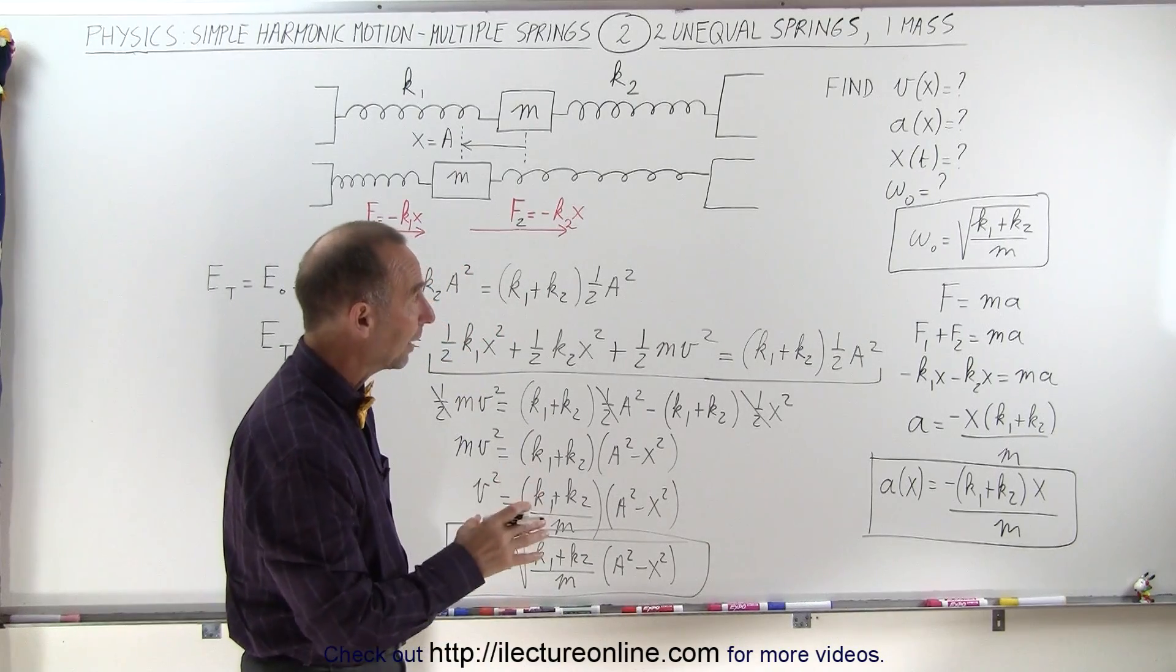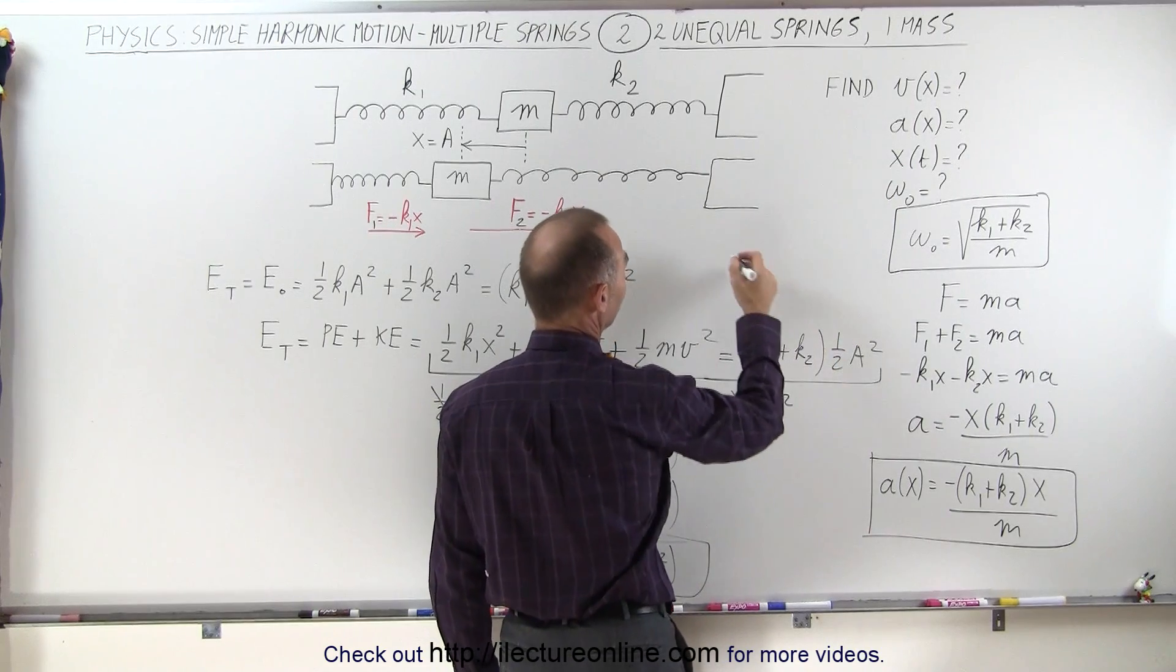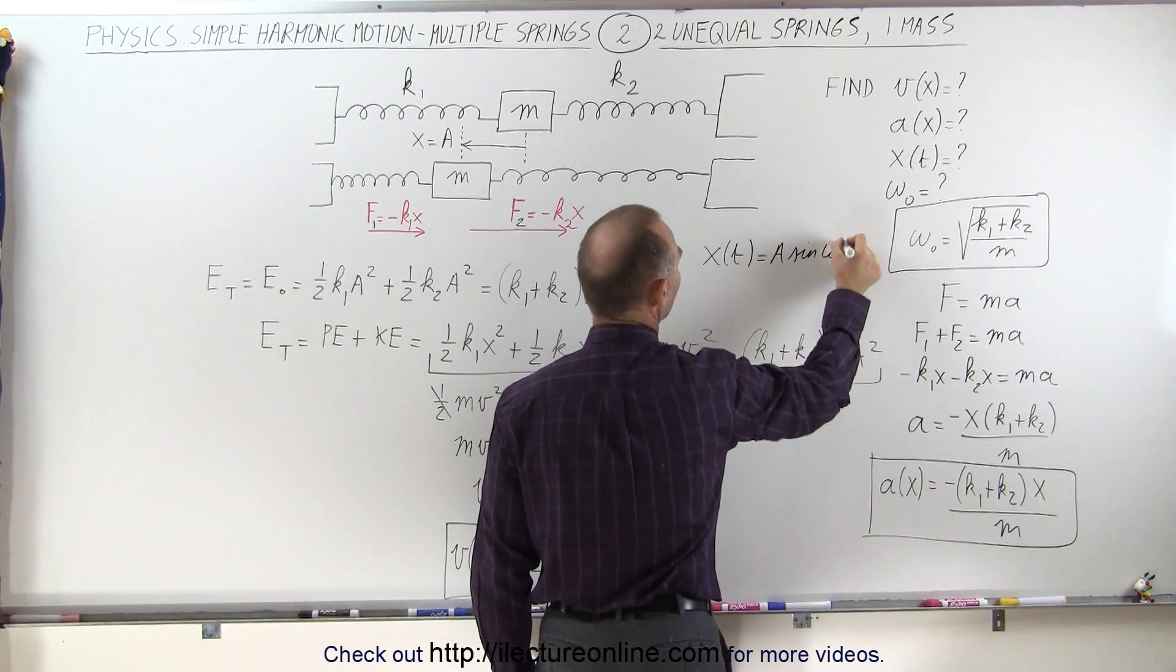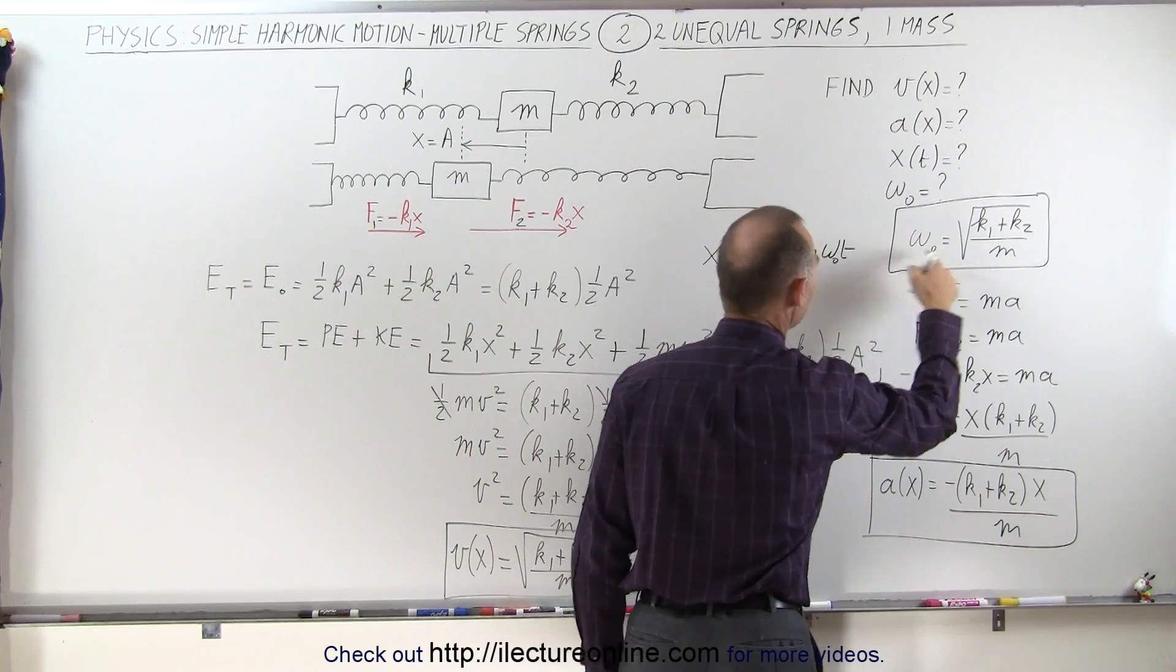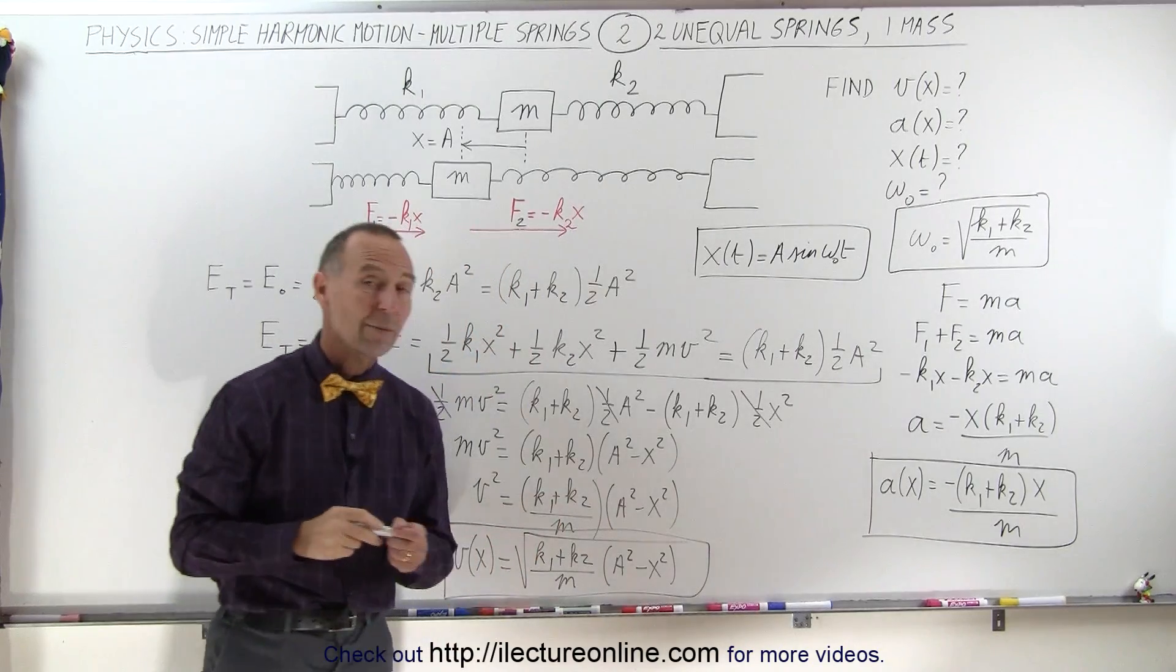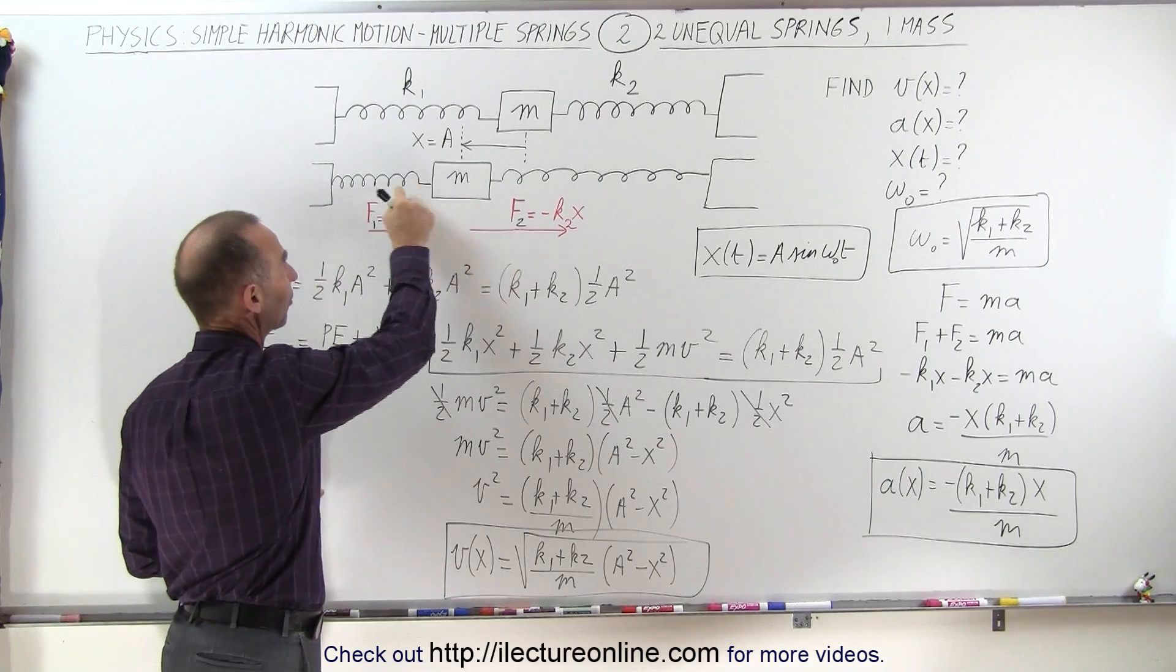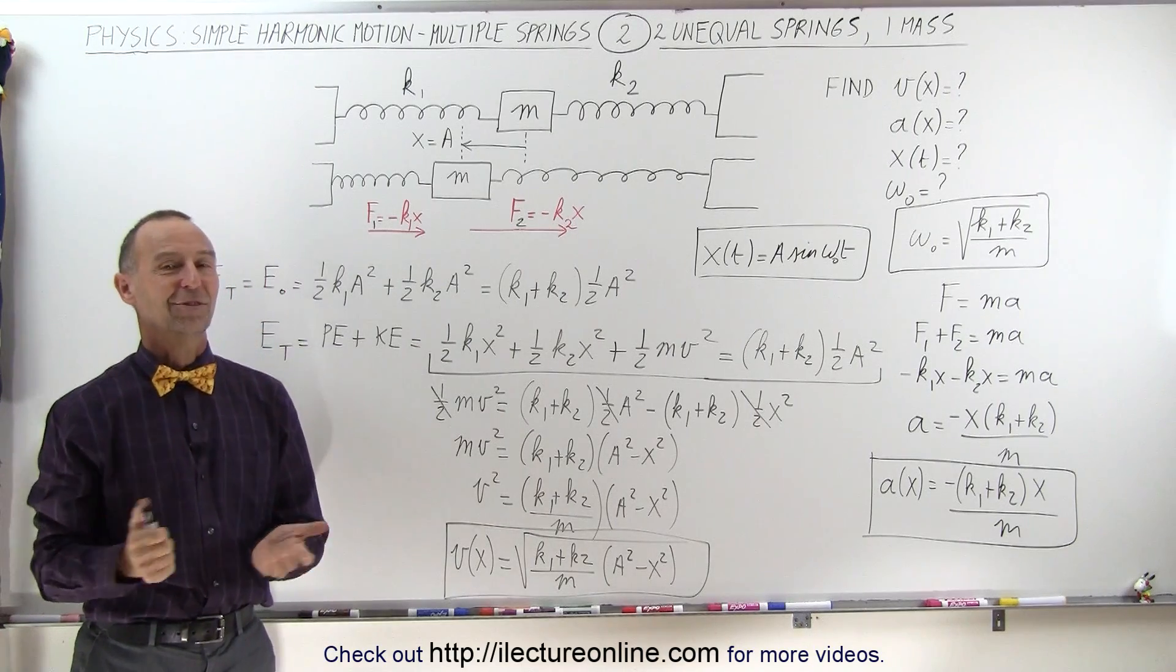Again, we want to write also the position as a function of time. For that, we're going to use the sine function. We can say that x as a function of time is equal to the amplitude times sine of omega t. And omega here is going to be this omega in this particular case because the spring constants are not the same. And that's how we find the various equations that explain mathematically the simple harmonic motion. We have a single mass attached to two springs that are pushing and pulling at the same time. And that's how it's done.